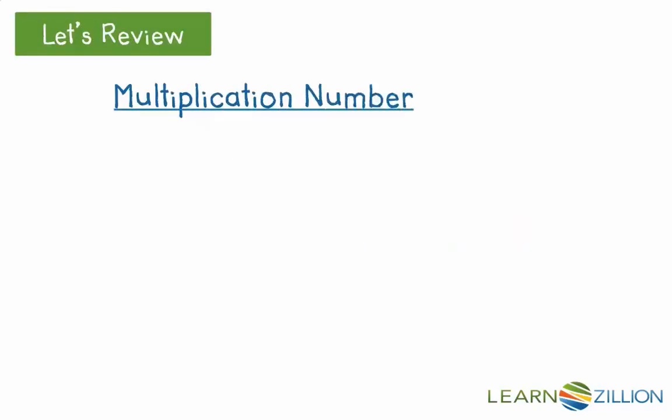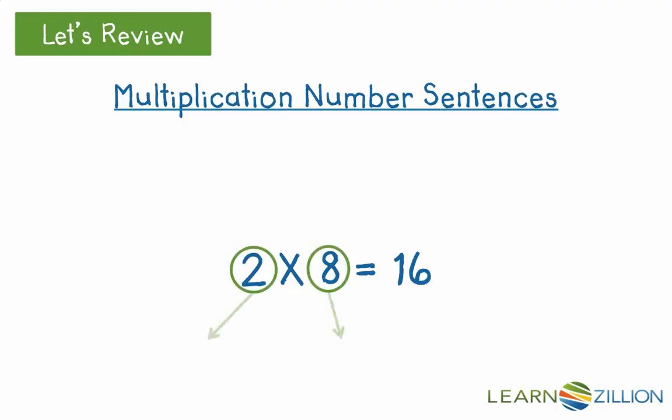Let's review multiplication number sentences, like 2 times 8 equals 16. The two numbers that are multiplied together are called factors. The answer in a multiplication number sentence is called a product.